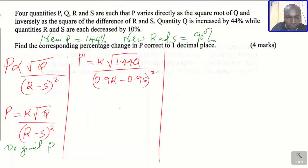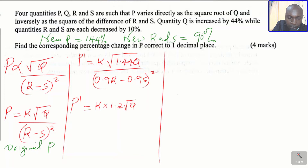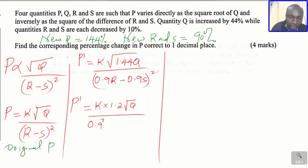That is the new value of P. Now we simplify this equation. K multiplied by the square root of 1.44 gives 1.2, times the square root of Q. For the denominator, looking at 0.9R minus 0.9S, you can see 0.9 is common in both terms. So we factor it out: 0.9 is common, and since those two terms are being squared, we get 0.9 squared as a factor, remaining with R minus S in the bracket.